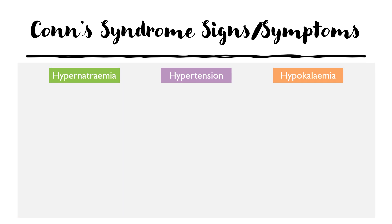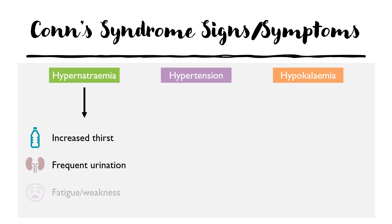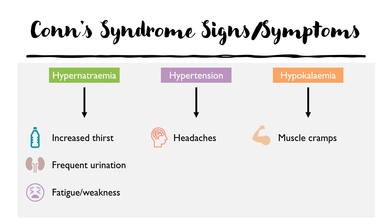With hypernatremia, patients might feel more thirsty than normal, go to the toilet more often, and experience fatigue or weakness. With hypertension, patients may experience headaches, typically at higher uncontrolled blood pressure levels. With hypokalemia, patients may complain of muscle cramps or heart palpitations, and it's important to treat this quickly as there is a risk of cardiac arrhythmia.